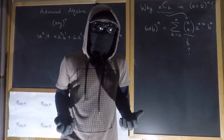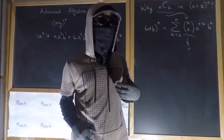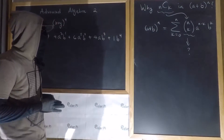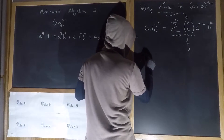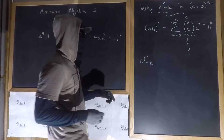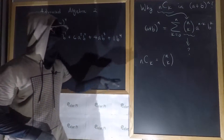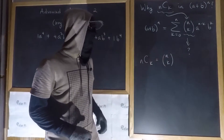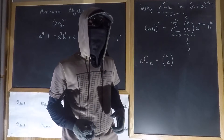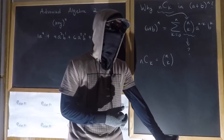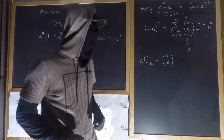In another video I previously made I introduced n choose k, also known as combinations. I explained what n choose k does. Whether you denote it one way or the other, what n choose k does is it figures out the number of ways to pick k items at a time from n items. So how many ways are there to choose k items at a time from n items? That's what n choose k answers. So why does it show up here? That's the question.